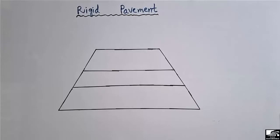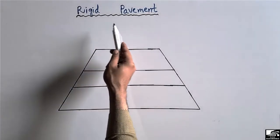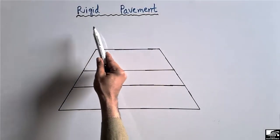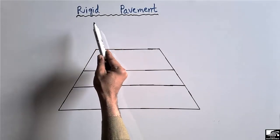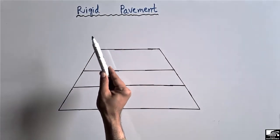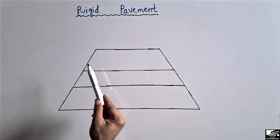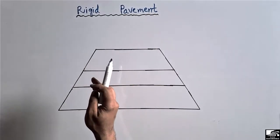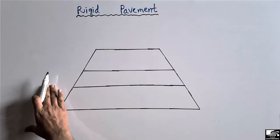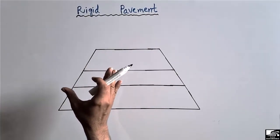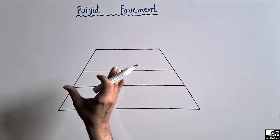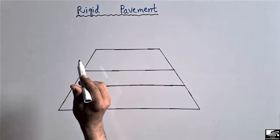Hello guys, welcome back to the Civil Engineering YouTube channel. Please subscribe to our channel for daily civil engineering videos. Today our lecture is about the layers of the rigid pavement. The rigid pavement is a special type of pavement made up of rigid material, which has high flexural rigidity, and due to this it shows very little deflection under high loading.